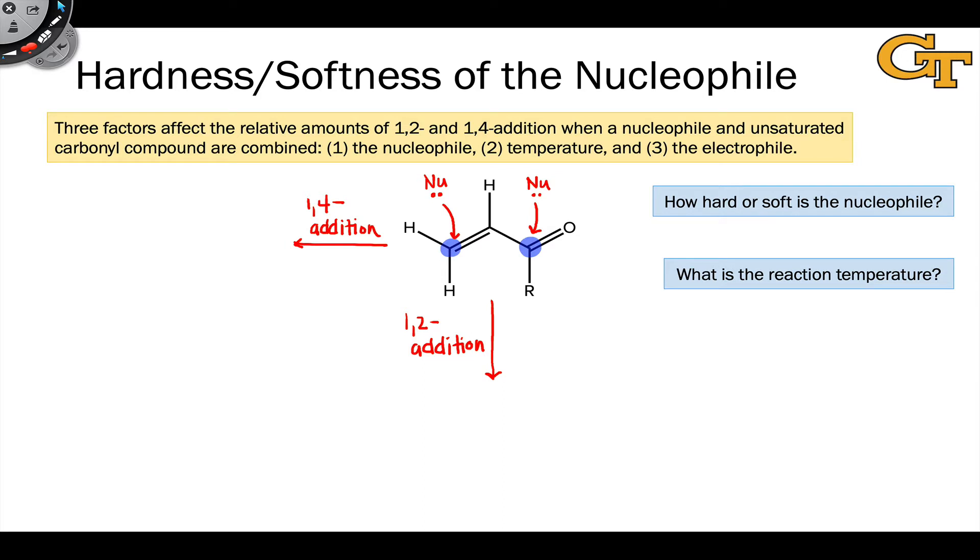We'll understand the underlying reason why temperature affects this outcome here in a second. And the third question is related to the electrophile, the unsaturated carbonyl compound. How Lewis acidic is the carbonyl carbon? And what impact does that have on direct versus conjugate addition? So in the remainder of this video, we're going to look in detail at these three factors and understand how to make predictions and rationalize outcomes using these three factors.